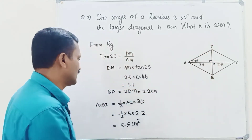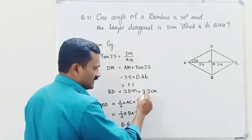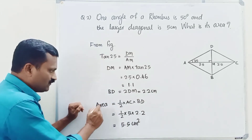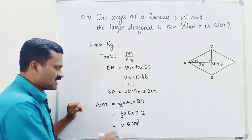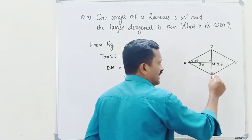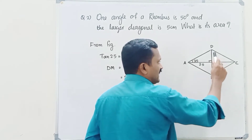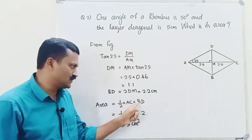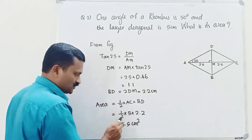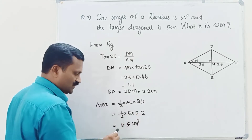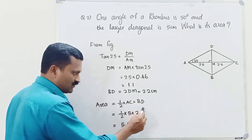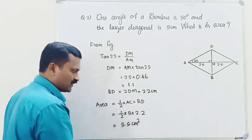DM is half of BD. BD is one of the diagonals, so BD equal to 2 times DM, that is 2 into 1.1, which equals 2.2 centimetres. Then the area of the rhombus is half into the product of the diagonals. The diagonals are AC and BD, so area is half into AC into BD — that is half into 5 into 2.2, which equals 5.5 centimetres squared.